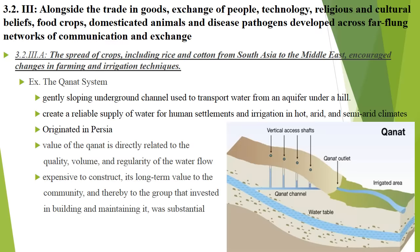Finally, 3.2.3: alongside trading goods, the exchange of people, technology, religion, cultural beliefs, food crops, domesticated animals, and disease pathogens develops across far-flung networks of communication and exchange. Basically, tons of stuff is spreading across these trade and communication networks — technology, culture, religion, economics, and political ideas will all transform.